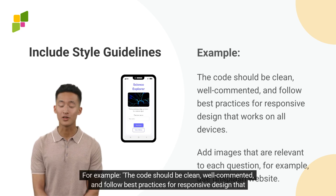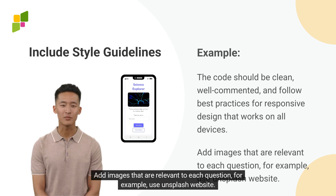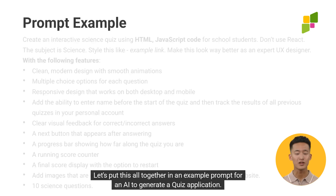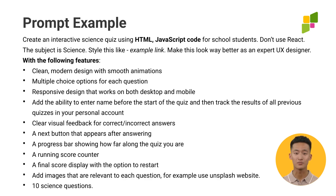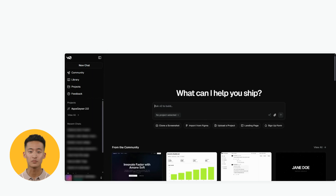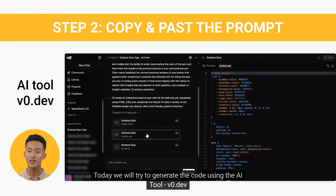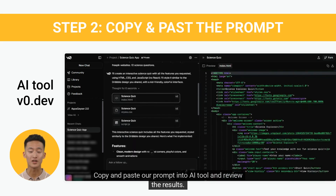For example, the code should be clean, well-commented, and follow best practices for responsive design that works on all devices. Add images that are relevant to each question — for example, use the Unsplash website. Let's put this all together in an example prompt for an AI to generate a quiz application. Today we will try to generate the code using the AI tool v0.dev. Copy and paste your prompt into the AI tool and review the results.